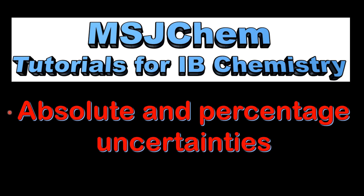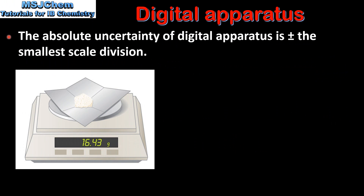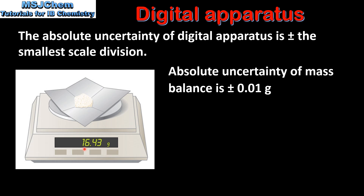This is MSJChem. In this video I'll be looking at absolute and percentage uncertainties. We'll start by looking at the uncertainty of digital apparatus. The absolute uncertainty of digital apparatus such as a mass balance is plus or minus the smallest scale division. This mass balance can measure to two decimal places, therefore the absolute uncertainty of the mass balance is plus or minus 0.01 grams.